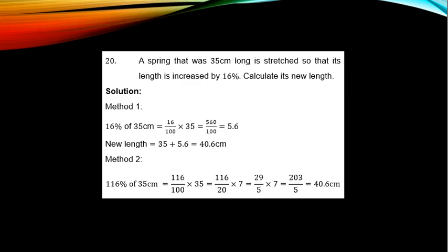You can get the new length in two ways. Method 1: Calculate 16% of the original length. That is 5.6. Add it to the original length. So the new length is 35 plus 5.6, which is 40.6cm. Method 2: Take both the original length 100% and the increment together, that is 116% of 35, and that gives you straight 40.6cm.